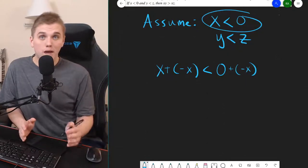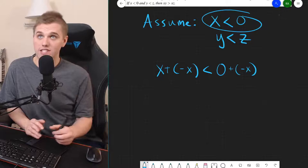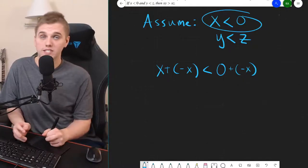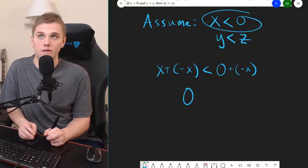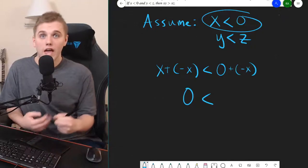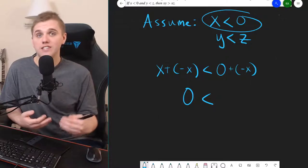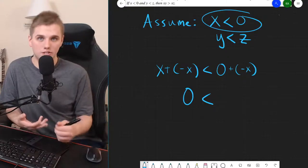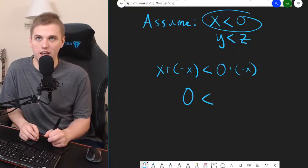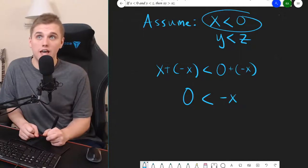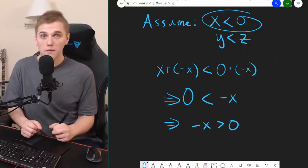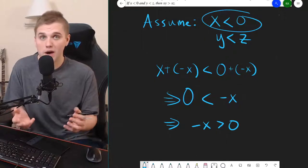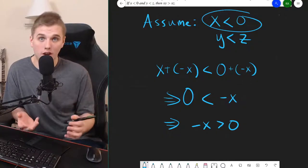Now, we can simplify both the left-hand side and the right-hand side here because x plus negative x, according to the properties of a field, must be zero. And on the right-hand side, if we add zero to any element, it's just what we started with, which is here negative x. So, this says that negative x is greater than zero. So, we now have a positive element in our field f.